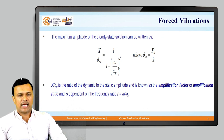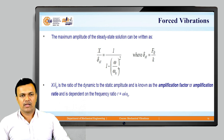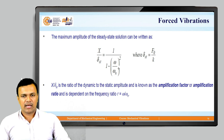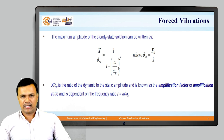The maximum amplitude of the steady-state solution can be written as x / delta-st equals 1 / (1 minus (omega/omega-n) squared), where delta-st is f0/k. The ratio x / delta-st is the ratio of dynamic amplitude to static amplitude, also known as the amplification factor or magnification factor, and the frequency ratio omega/omega-n is the dependent factor for this value.